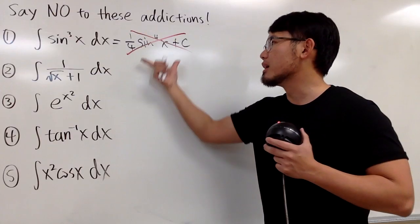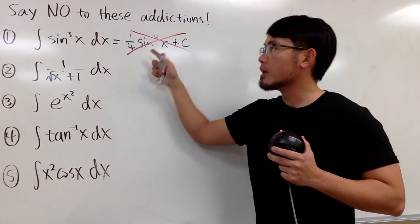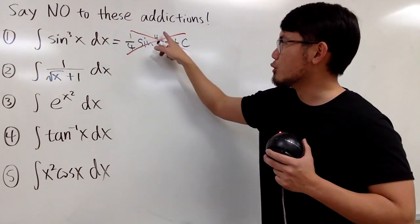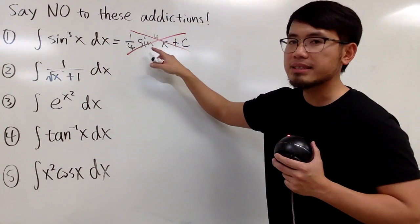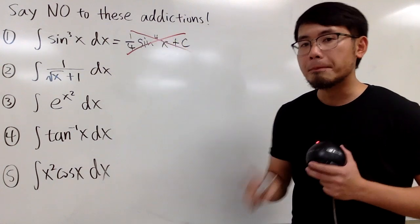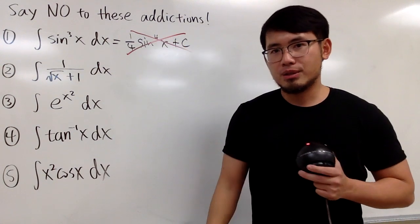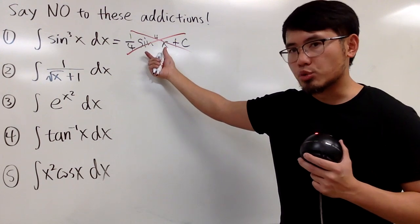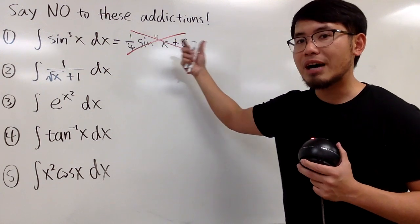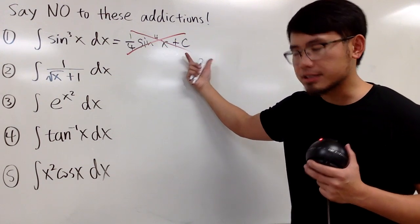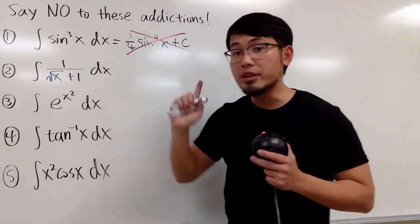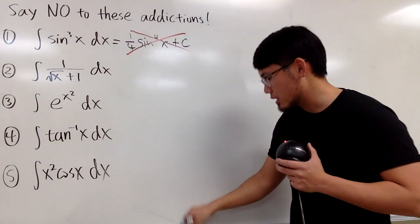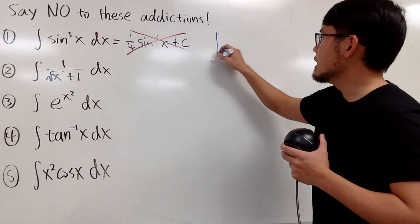Why? Because if you differentiate this, you bring the fourth to the front, and you minus 1 — yes, you get sine to the third power of x — but you have to use the chain rule. You multiply by the derivative of sine x, so you have to have a cosine x. We did not have a cosine x to help us out. But the correct version is this: